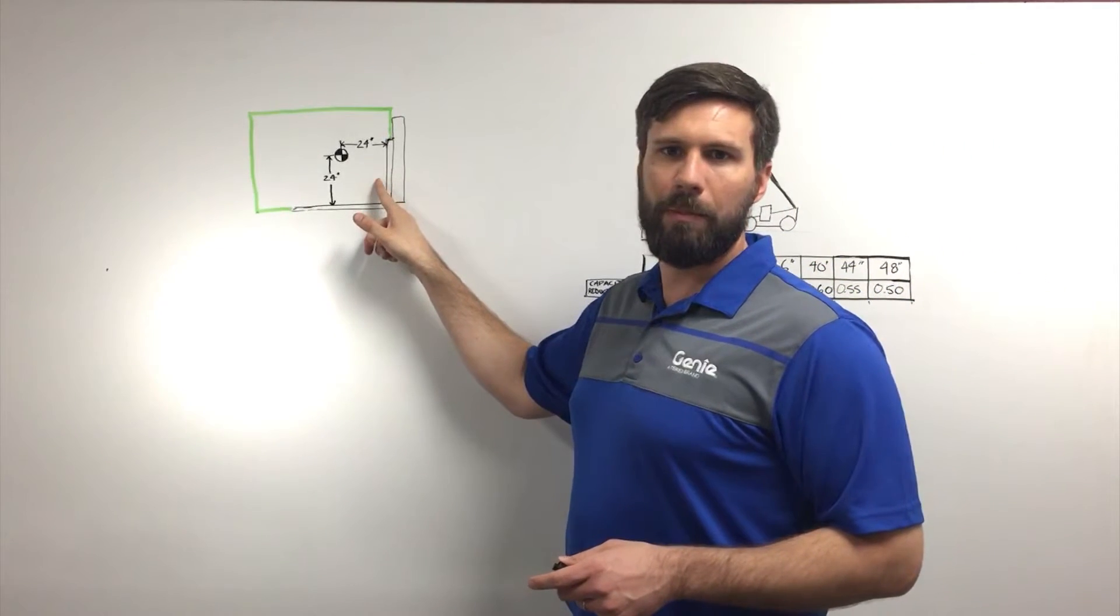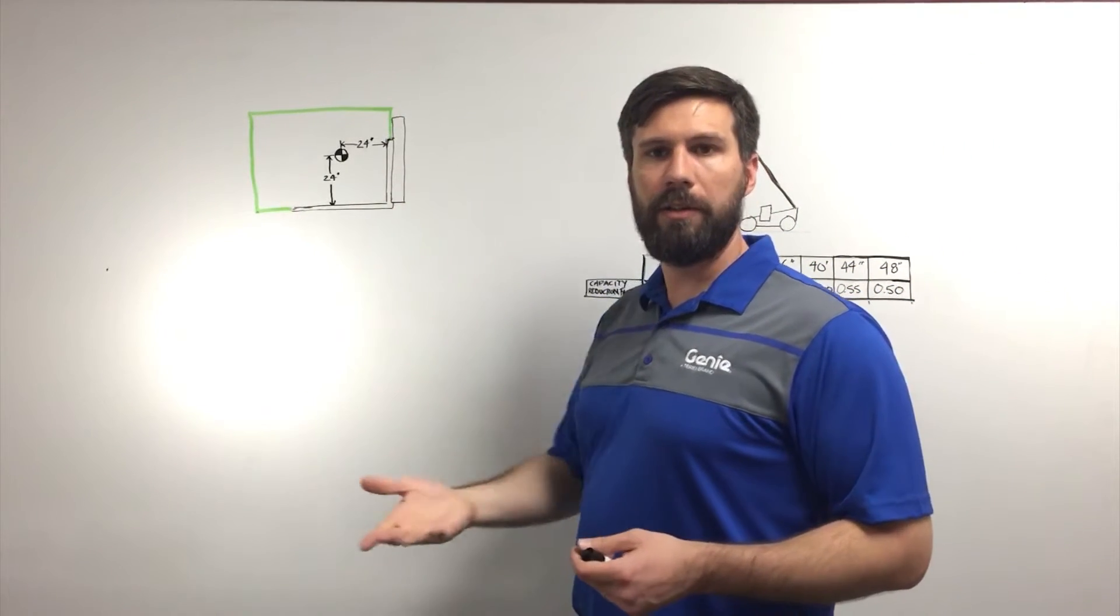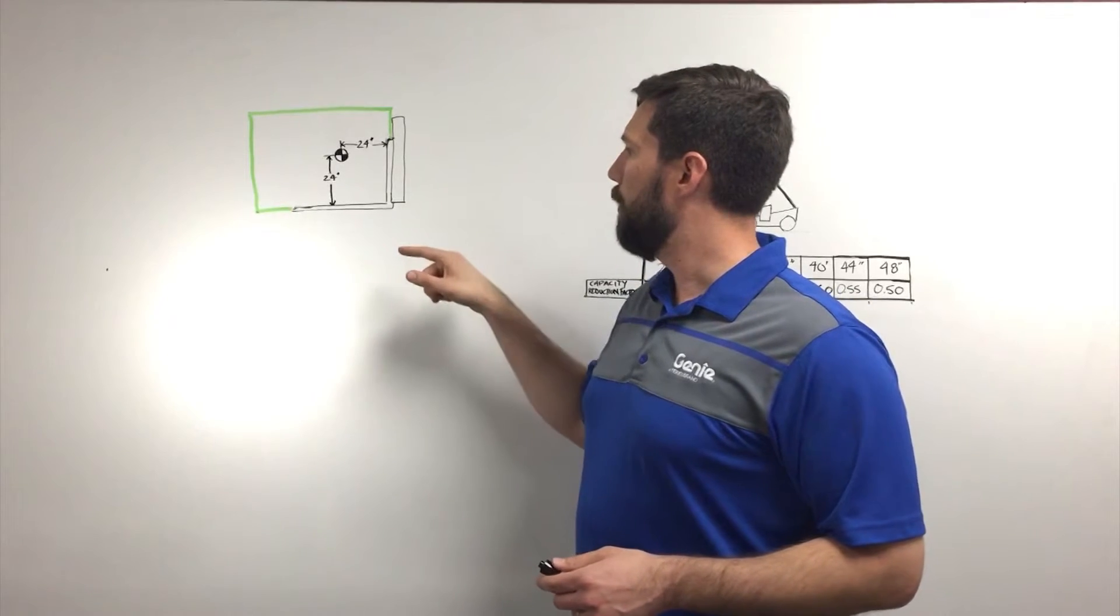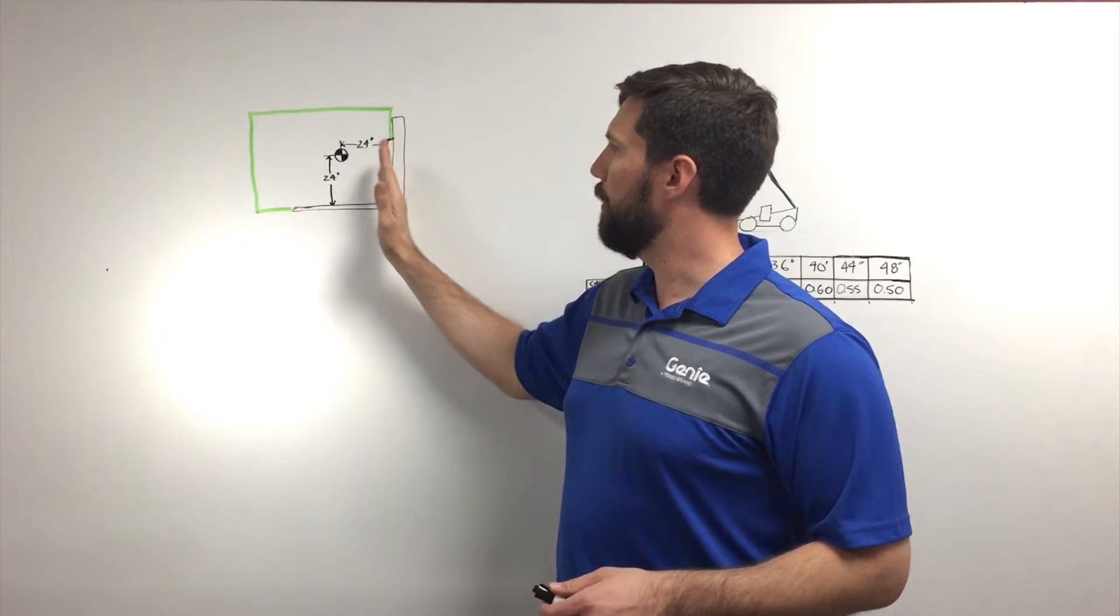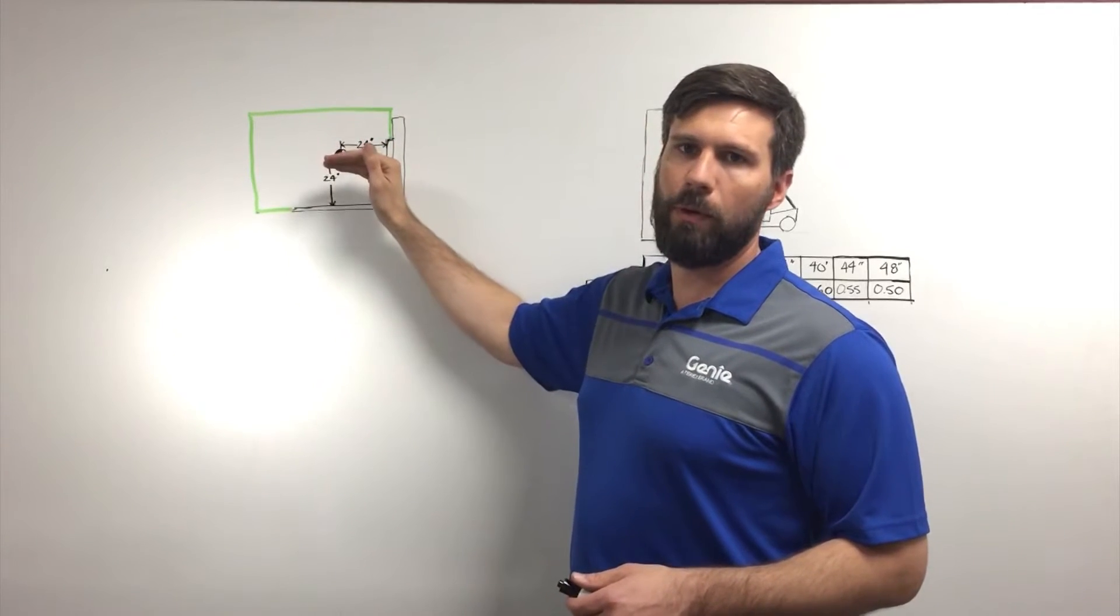This is the front of the vertical fork arm where you'd rest the load as you pick it. So what this is saying is that the center of the load is 24 inches from there and also 24 inches high.